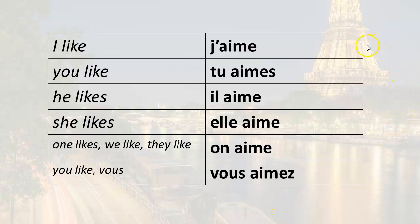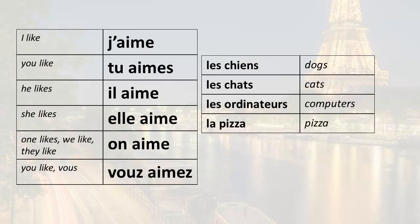So now we have all the singular forms: j'aime, tu aimes, il aime, elle aime, on aime, vous aimez. Let's go ahead and add a little vocabulary: les chiens (dogs), les chats (cats), les ordinateurs (computers), la pizza (pizza). This is the fun and exciting part of the lesson — this is where we put everything together so that you can begin communicating and speaking in French.